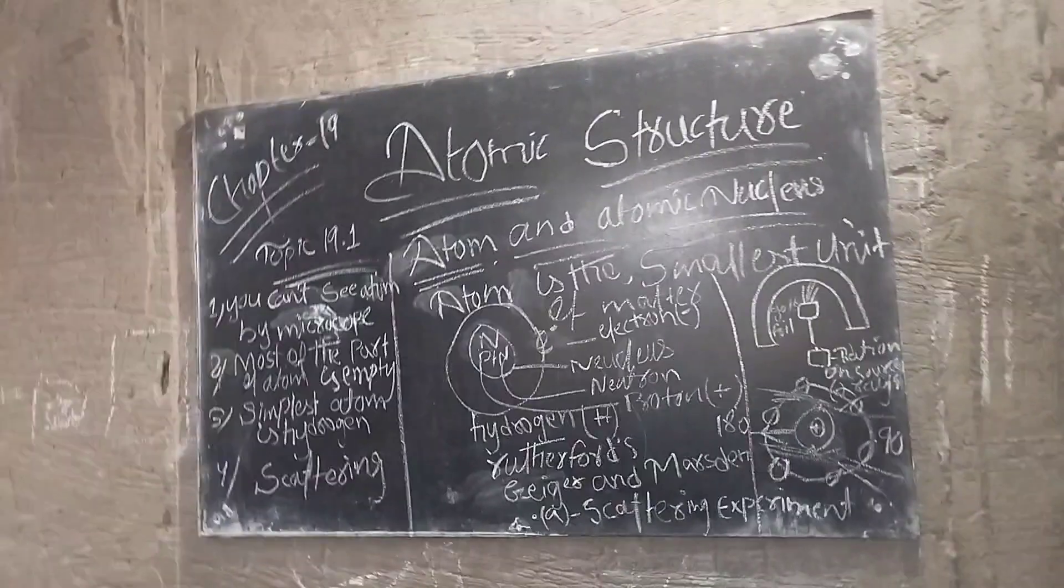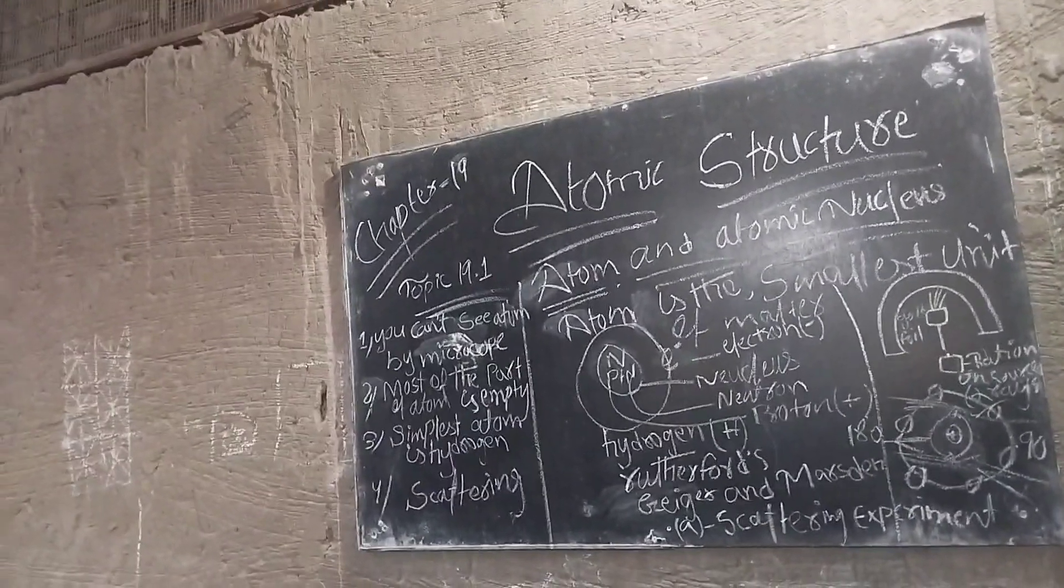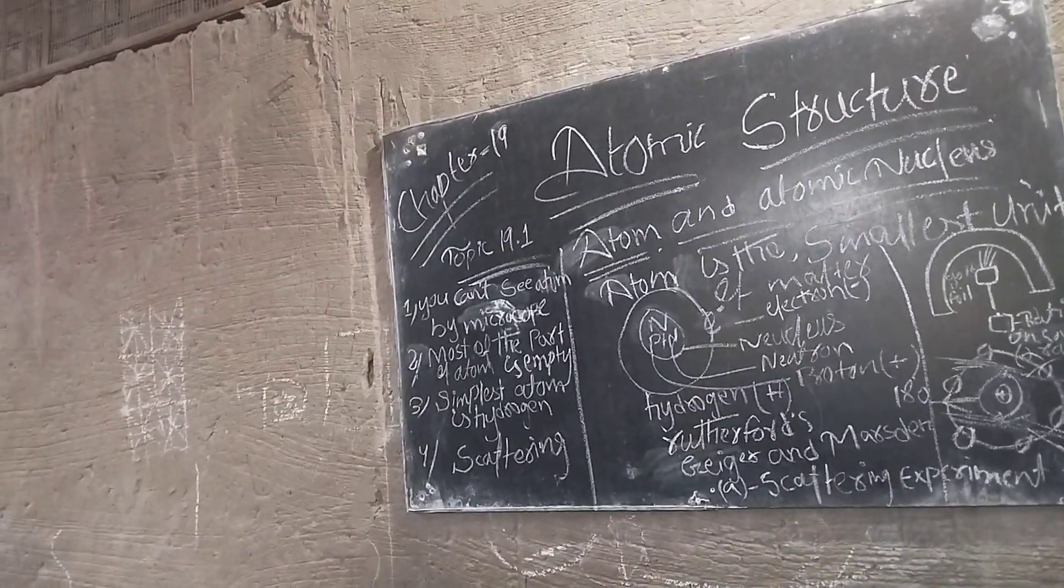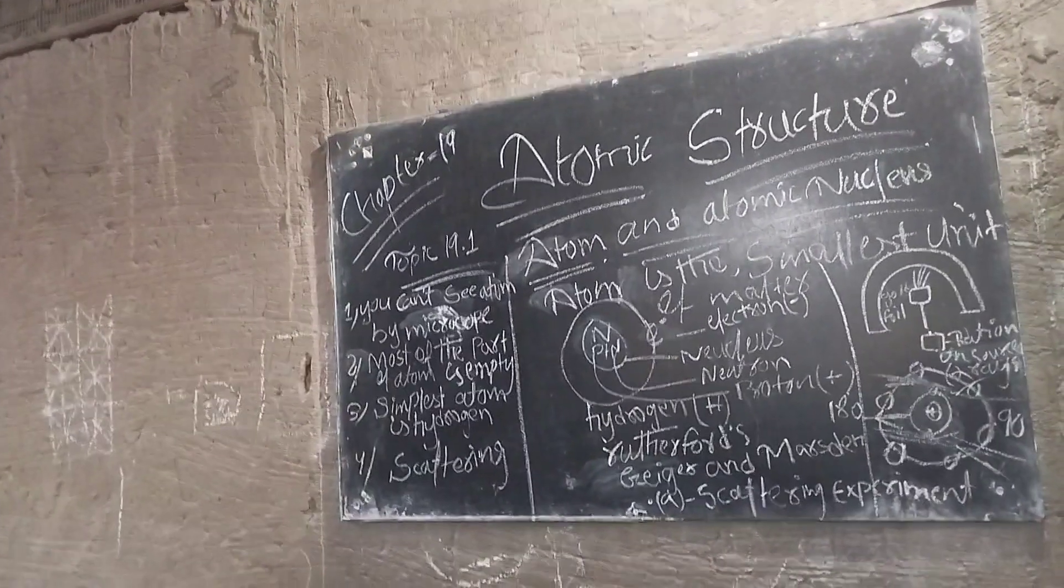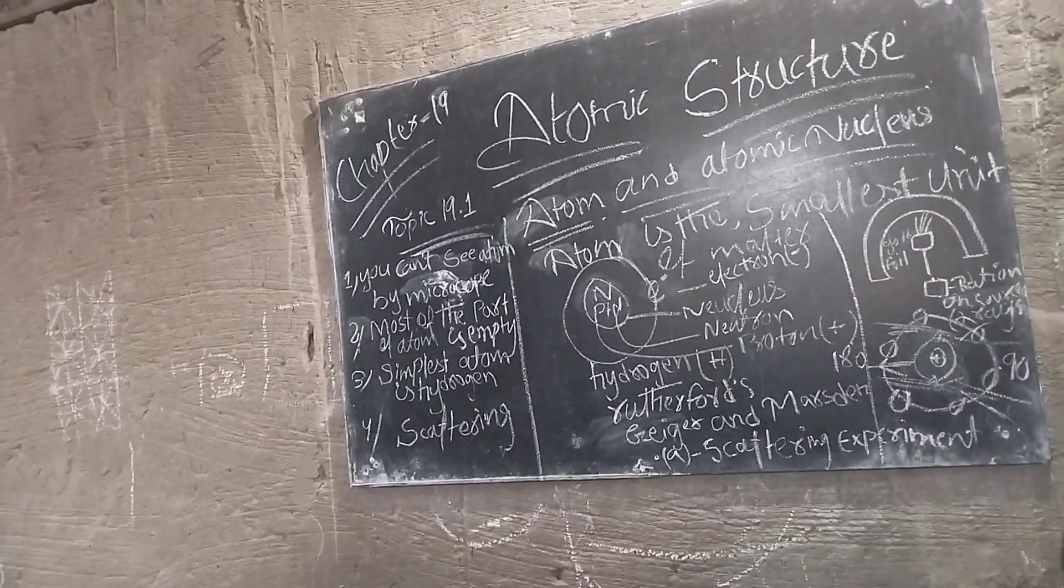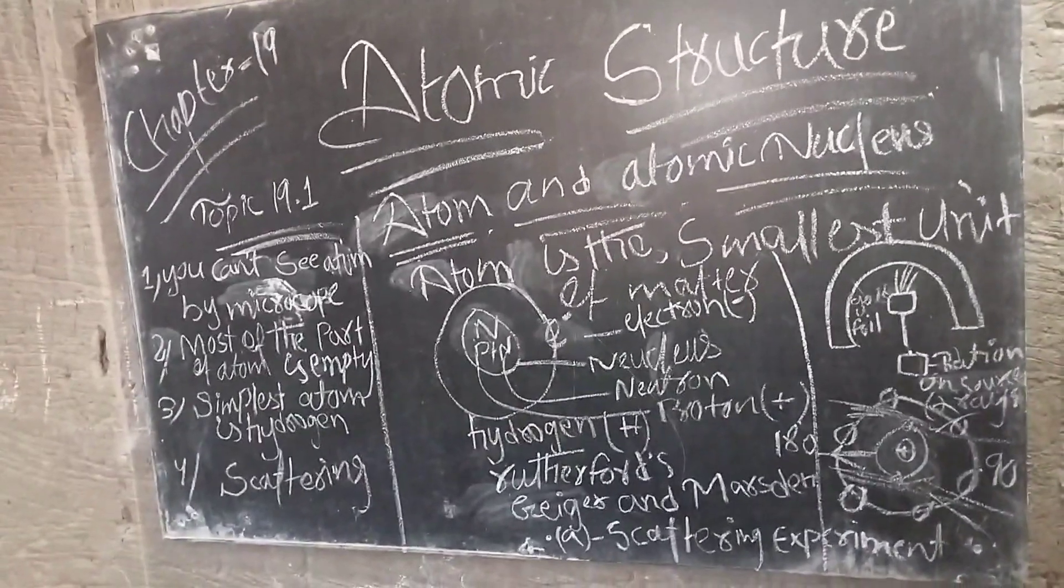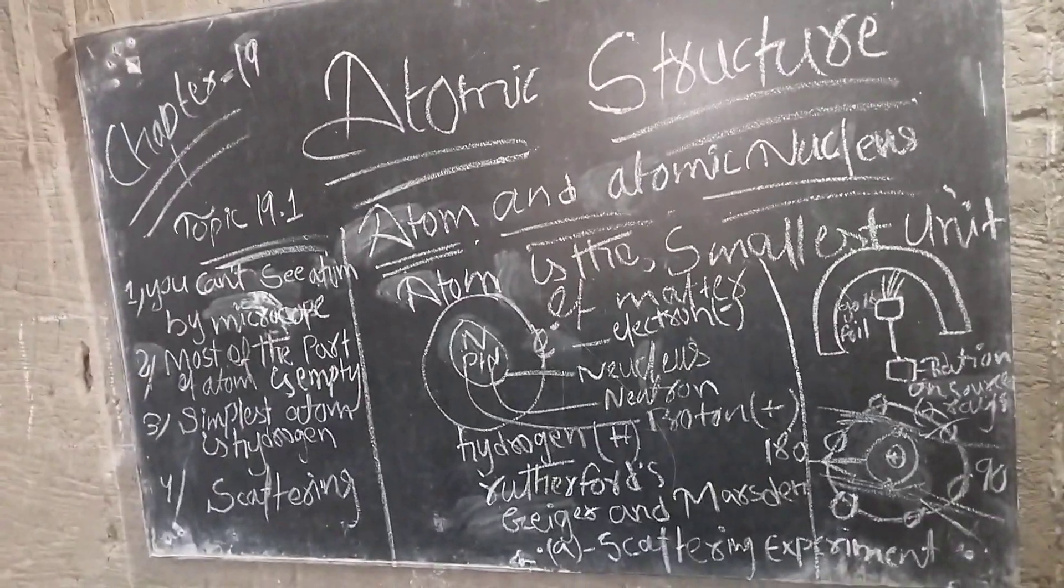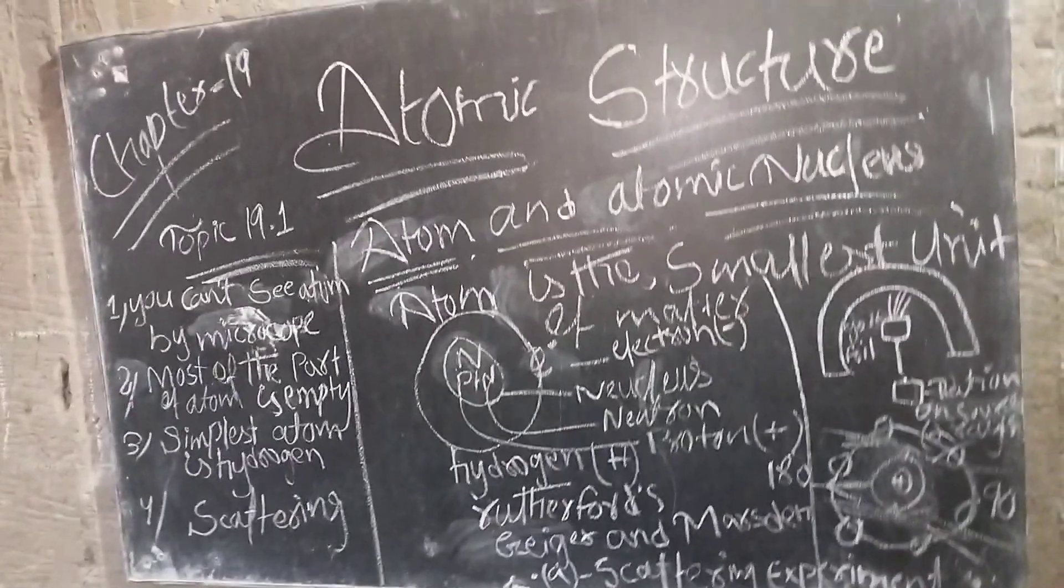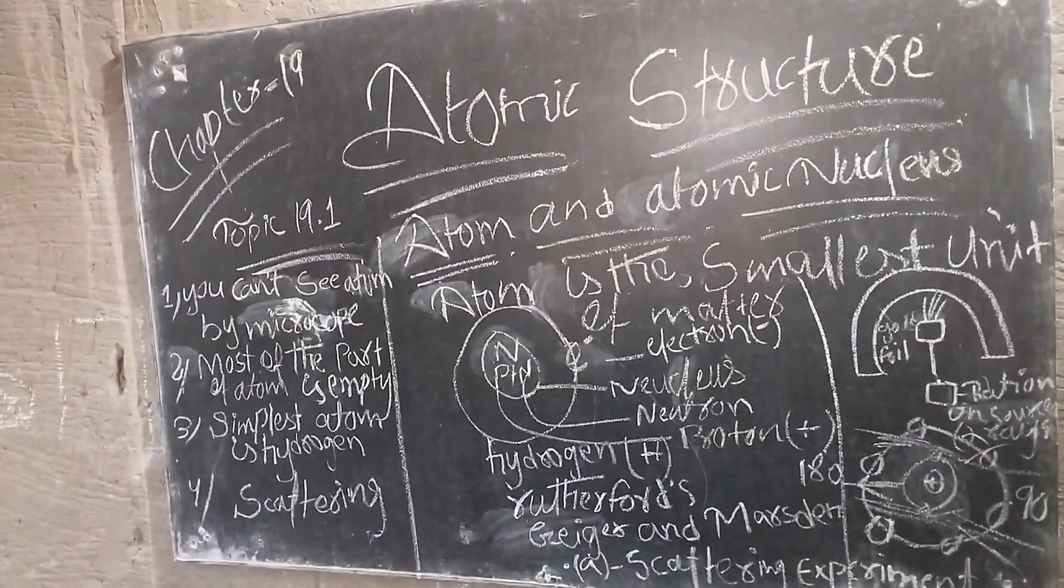This is the topic of Atomic History and Atomic Structure. This is a matter of material. Neutrons and Protons have minimal charges. Neutrons have charges too.